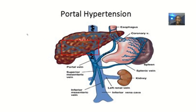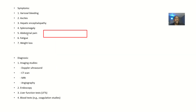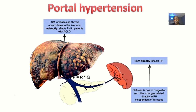For diagnosis, imaging studies such as Doppler ultrasound, CT scan, MRI, and angiography can be used. Endoscopy, liver function tests, and blood tests can also come in. You can see what a liver looks like when there is portal hypertension.